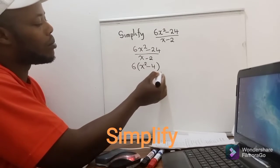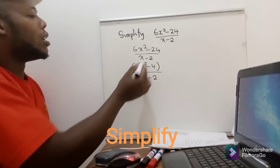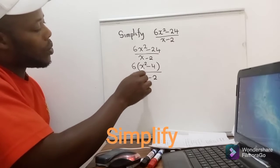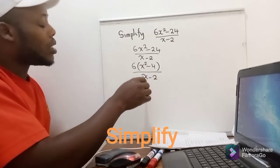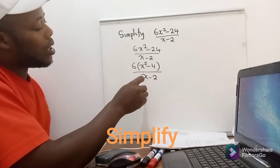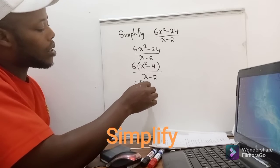This and this are the same here. You divide by x minus 2. So if you can see, inside the brackets here we can use the idea of difference of two squares, so it will look like this.